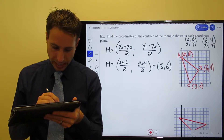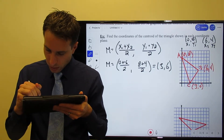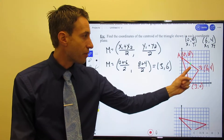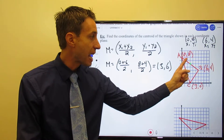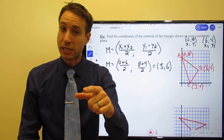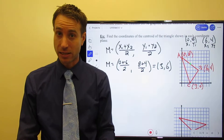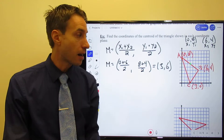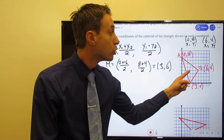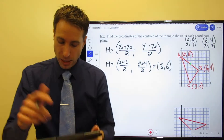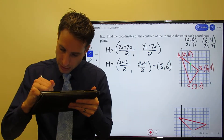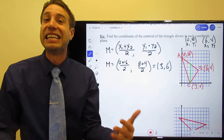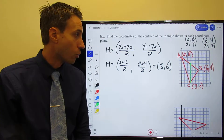Let me plot that midpoint at (3, 6). Now I draw the median, which extends from vertex C to that midpoint — and it turns out to be a vertical line right there. That's my first median.